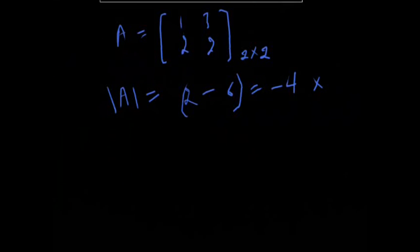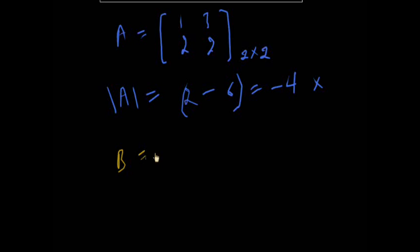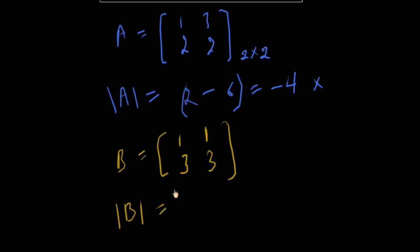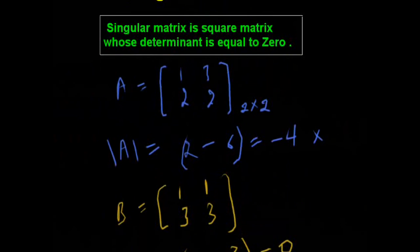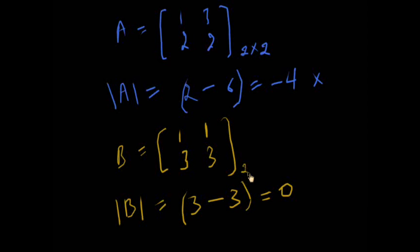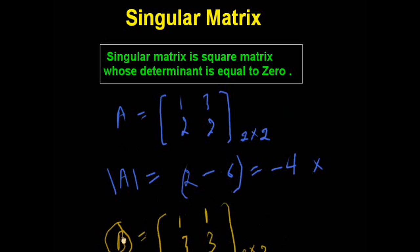Let's take another example. Suppose matrix B is [[1, 3], [1, 3]]. We calculate its determinant: 1×3 minus 3×1 equals zero. So B is a square matrix whose determinant is zero, which means B is a singular matrix.